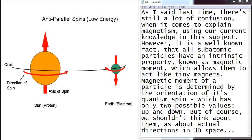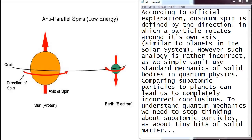But of course, we shouldn't think about them as about actual directions in 3D space. According to official explanation, quantum spin is defined by the direction in which a particle rotates around its own axis, similar to planets in the solar system. However, such analogy is rather incorrect, as we simply can't use standard mechanics of solid bodies in quantum physics. Comparing subatomic particles to planets can lead us to completely incorrect conclusions. To understand quantum mechanics, we need to stop thinking about subatomic particles as about tiny bits of solid matter.